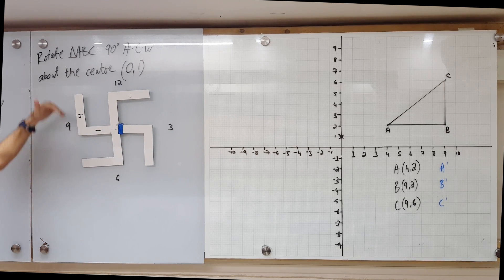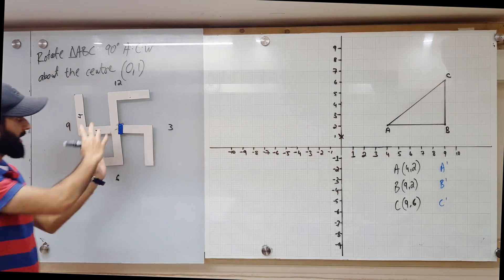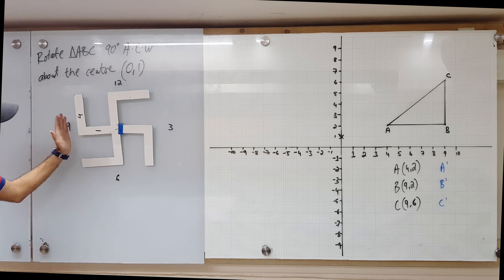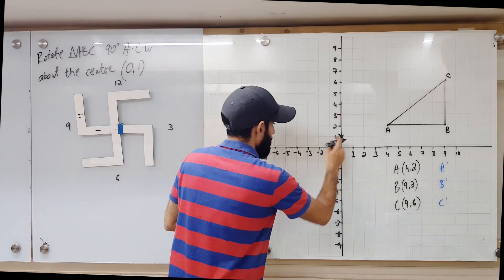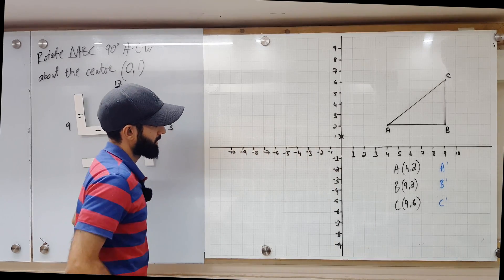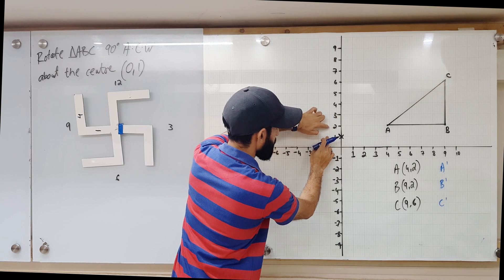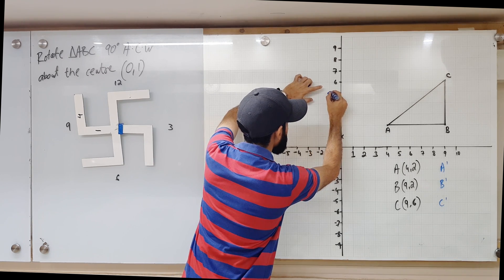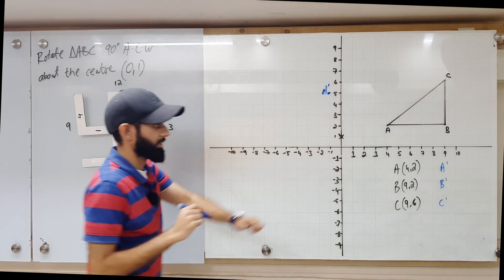We have to move one unit left and four units up in order to get to the image. Meaning this point, once you rotate it 90 degrees anti-clockwise, is going to go one unit left from the center and then four units up. From the center: one unit left and then four units up — one, two, three, four. So here's A prime.